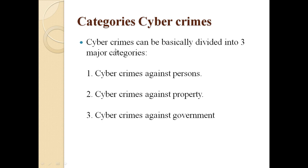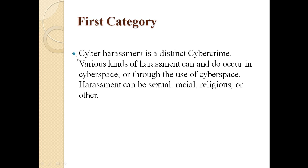Cybercrime can be broadly divided into three major categories: cybercrimes against a person, cybercrimes against property, and cybercrime against the government. The first category includes cyber harassment — various kinds of harassment can occur in cyberspace, such as sexual, racial, or religious harassment. Many people think that on the internet they are not being watched and can do whatever they want.